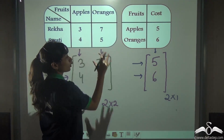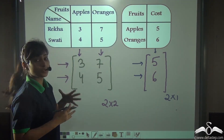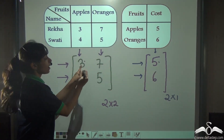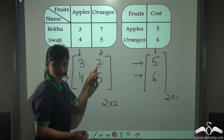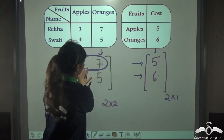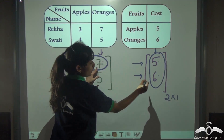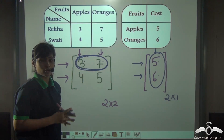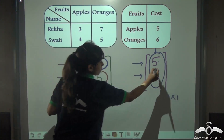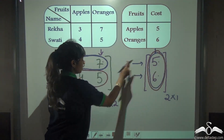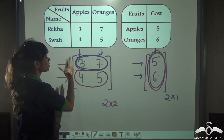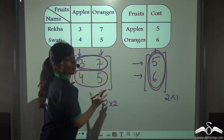What we have to do is find out the total cost — the amount of money spent by Rekha and Swati individually. To do that, multiply the number of apples by the cost of apples and the number of oranges by the cost of oranges, then add them up for Rekha. So 3 needs to be multiplied by 5 and 7 needs to be multiplied by 6, and if we add them together we will know how much Rekha has spent. Similarly for Swati: multiply 4 into 5 and 5 into 6 and add them up. This is actually how we multiply matrices.